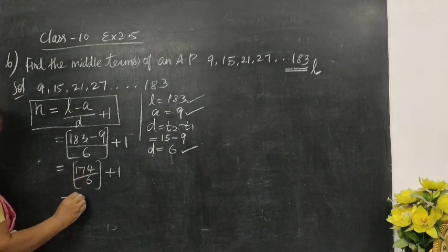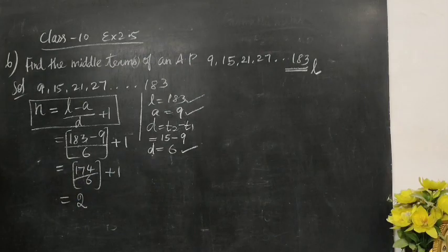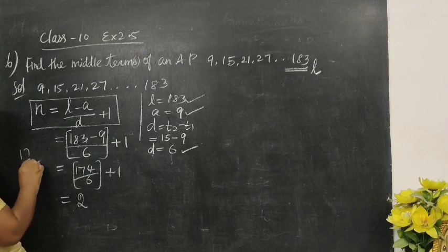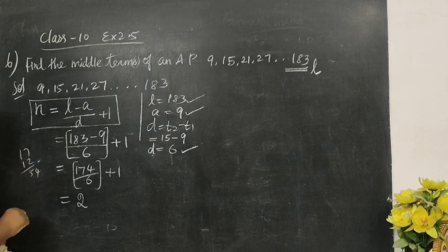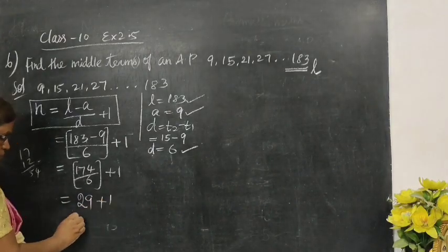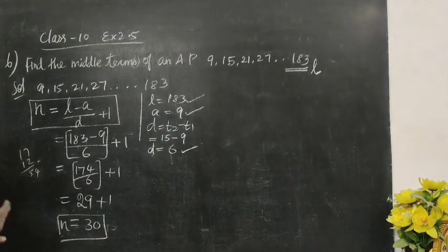Equal to... What is this? 174 divided by 6... 29 times. This is plus 1. Now, 30. So, number of terms equal to 30.